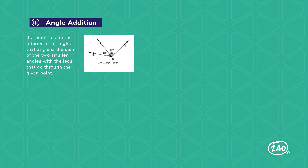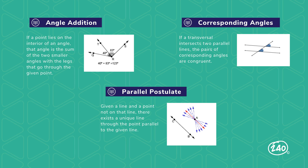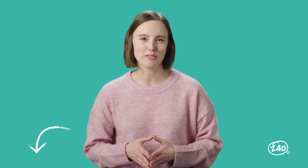Let's first talk about angle postulates. We've got angle addition: if a point lies on the interior of an angle, that angle is the sum of the two smaller angles with the legs that go through the given point. Corresponding angles: if a transversal intersects two parallel lines, the pairs of corresponding angles are congruent. Parallel postulate: given a line and a point not on that line, there exists a unique line through the point parallel to the given line. This section also covers angle theorems, including alternate exterior and interior angles, congruent complements and supplements, right angles, same side interior angles, and vertical angles. All these definitions can be found in your 240 study guide.